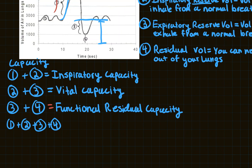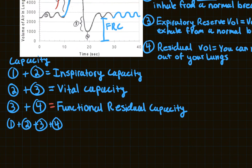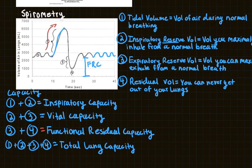Functional residual capacity is similar to residual volume, but you can think of it as your residual volume during quiet breathing. When you're normally breathing with small waves, you're not always maximally exhaling down to your residual volume. The amount of air you consistently don't get out during normal breathing is the functional residual capacity. And tidal volume plus inspiratory reserve volume plus expiratory reserve volume plus residual volume — that is your total lung capacity, the total amount of air you can hold in your lungs.